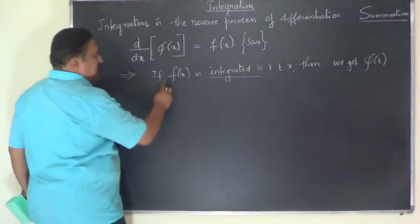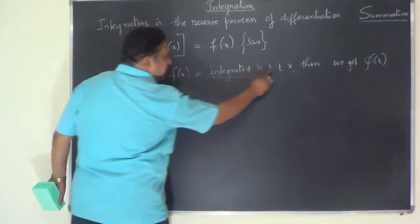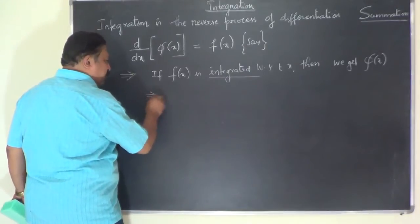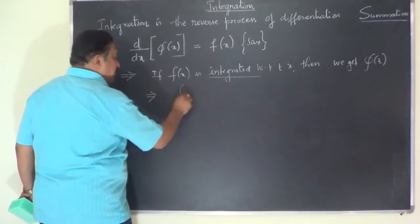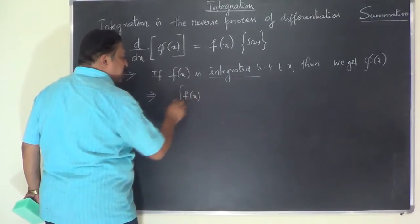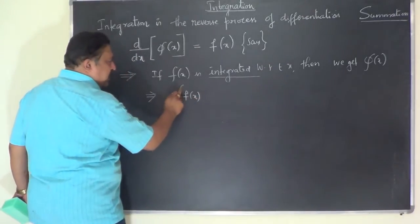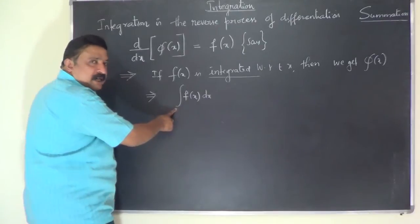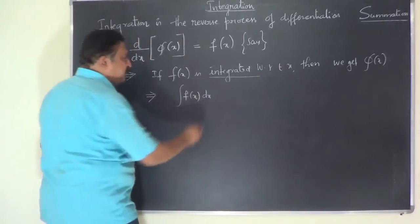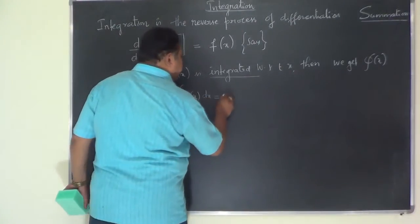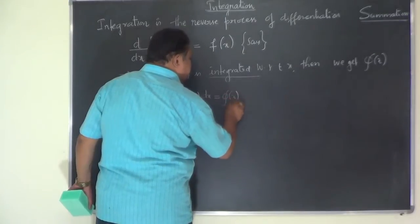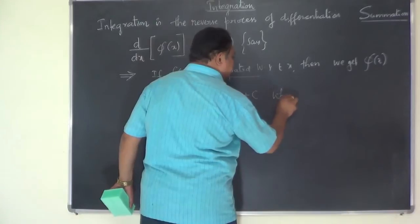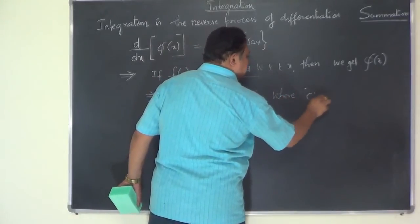Using the symbol of integration: if f of x is integrated with respect to x, then we get phi of x. We write this as: integral f of x dx, where dx means the process of integration is performed with respect to x, and we get phi of x plus c.